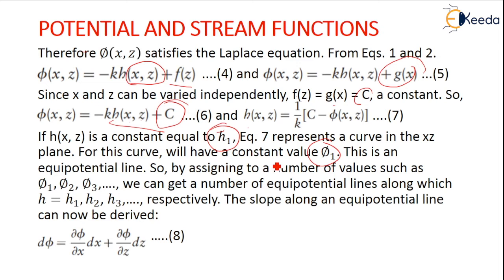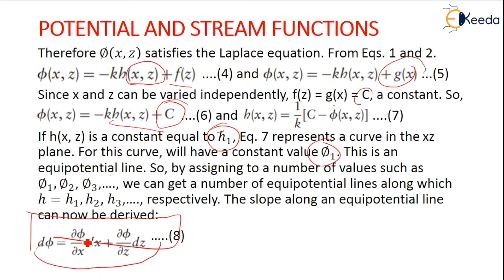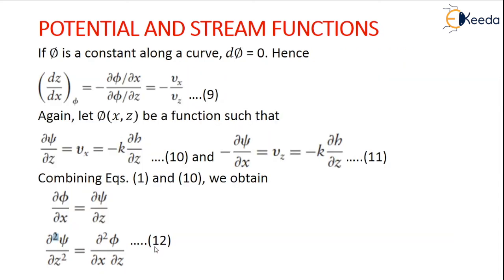By assigning a number of values such as phi 1, phi 2, phi 3, etc., we get a number of equipotential lines along h equal to h1, h2, h3 respectively. The slope along an equipotential line can be derived directly: d phi equals dou phi by dou x times dx plus dou phi by dou z times dz. If phi is constant along a curve then d phi equals 0, giving dz by dx with respect to phi equal to minus dou phi by dou x divided by dou phi by dou z.